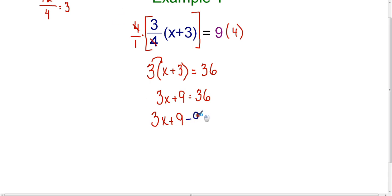I'm going to subtract 9 on both sides of the equation, and when I do that, I know that 9 minus 9 is 0. I was able to eliminate the 9, and I'm left with 3x equals 36 minus 9, which gives us 27.